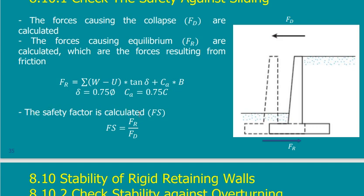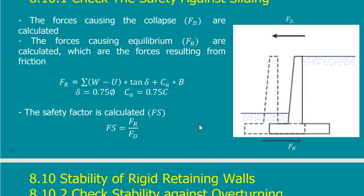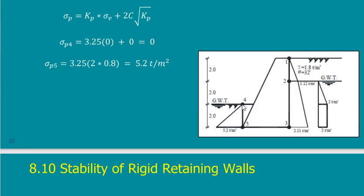The safety factor is calculated as resisting forces divided by driving forces. What we calculated is mainly the friction, but there may also be a passive triangle contributing to resistance. Sometimes we ignore this passive triangle. If I already have a factor of safety of 3, I don't need to add other factors — adding more means paying more for nothing. But there is a specific loading case that requires ignoring the passive.